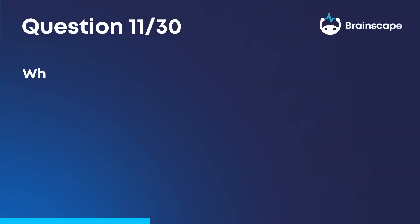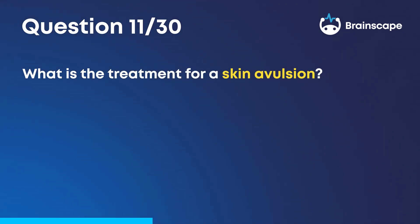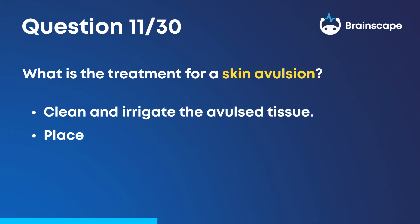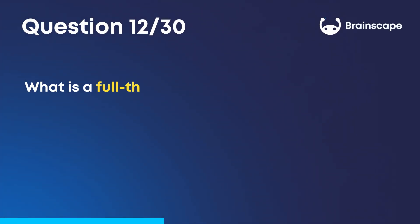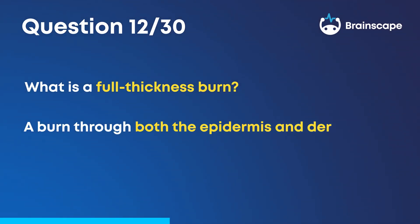Question 11. What is the treatment for a skin avulsion? Clean and irrigate the avulsed tissue, place back in anatomic position, and cover with dry, sterile dressing. Question 12. What is a full-thickness burn? A burn through both the epidermis and dermis.